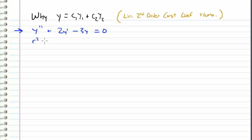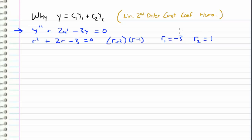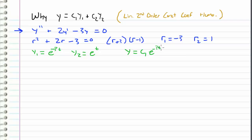We can go straight into the characteristic equation by pulling off the coefficients, so we get r squared plus 2r minus 3 equals zero. We can factor this into r plus 3 and r minus 1, which gives us two roots: r1 equals negative 3, and r2 equals 1. So y1 is e to the negative 3t, associated with the first root, and y2 equals e to the t, associated with the second root. In the last video I said to take linear combinations of these two, so the final solution y equals c1 times e to the negative 3t plus c2 e to the t. But why do we do this?